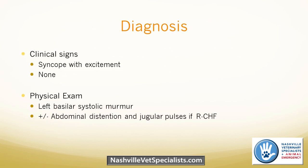Clinical signs can include syncope with excitement or exercise, but many of these dogs — especially puppies — may not have any signs, and owners may have no idea anything is wrong. The main reason we suspect pulmonic stenosis is based on physical exam. The finding would be a left basilar systolic murmur. Remember, both the pulmonic valve and the aortic valve are heard at the left base — up under the left arm — and that's where you'll hear the murmur loudest. It is just systolic.